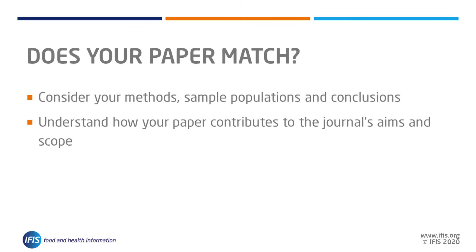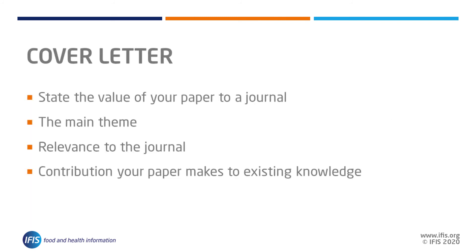For the paper you are currently writing or looking to submit, consider how well your methods, sample populations, and conclusions relate to the aims, scopes, and readerships to understand whether it is relevant. Finally, understanding how your paper contributes to the journal's aims and scope can be very useful information to include in a cover letter alongside your article. Pitching the value of your paper to a journal may help it be considered in more detail and receive a more careful reading than a submission with no cover letter at all.